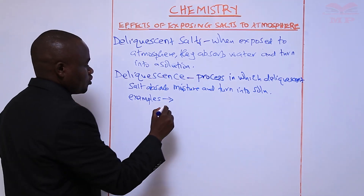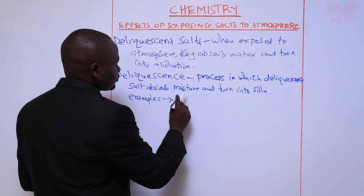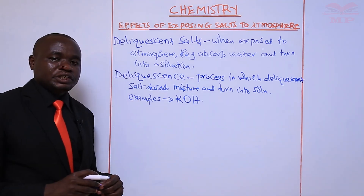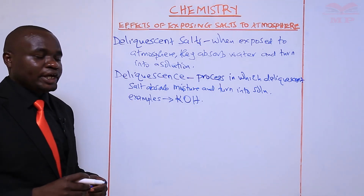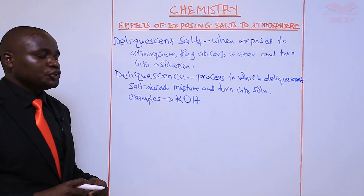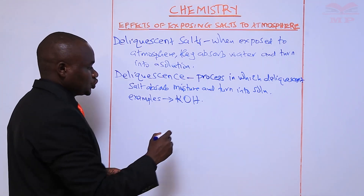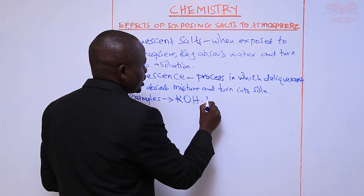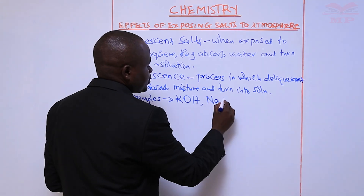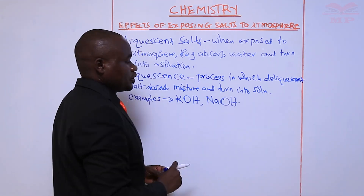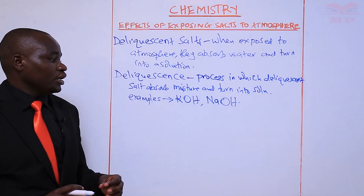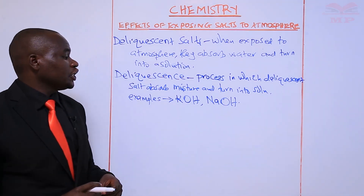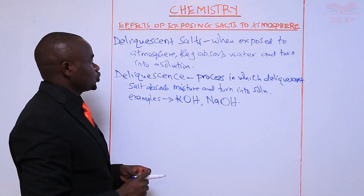Examples of deliquescent salts: we have potassium hydroxide — when potassium hydroxide is exposed to the air it will absorb moisture and turn into a solution. We also have sodium hydroxide — if sodium hydroxide is exposed to the air it will absorb moisture from the air and turn into a solution.